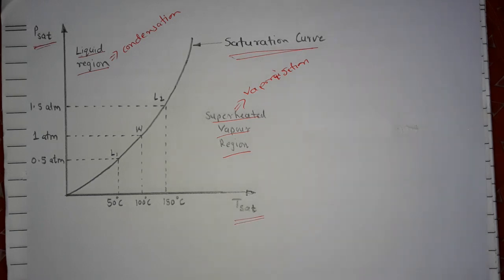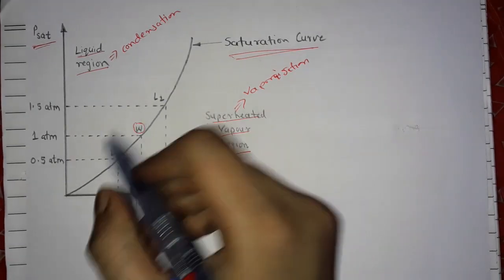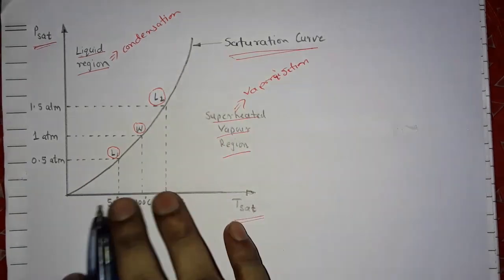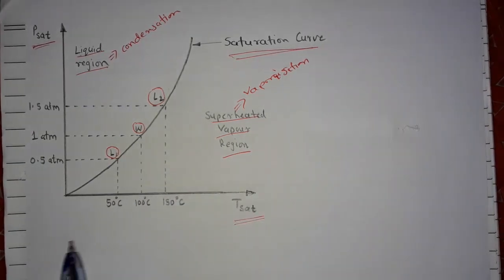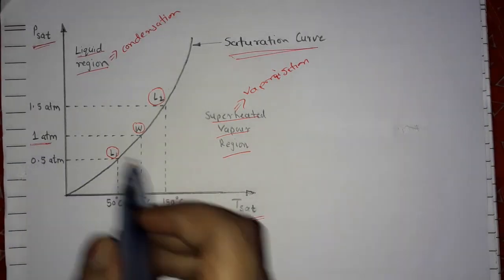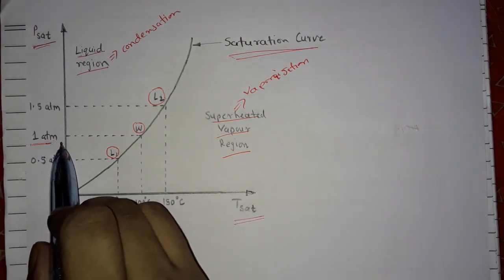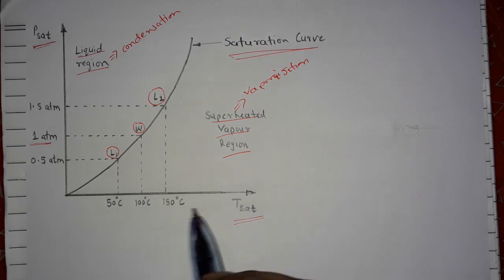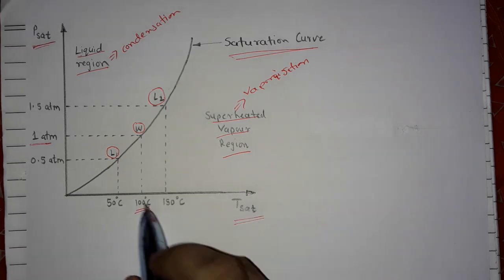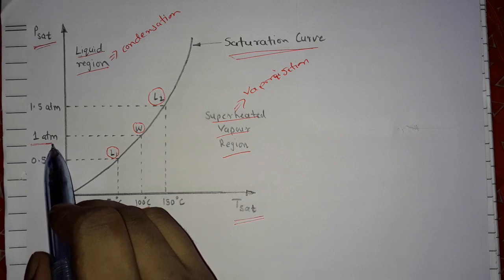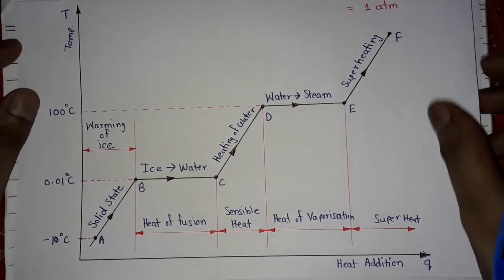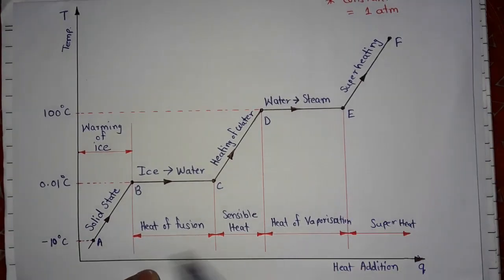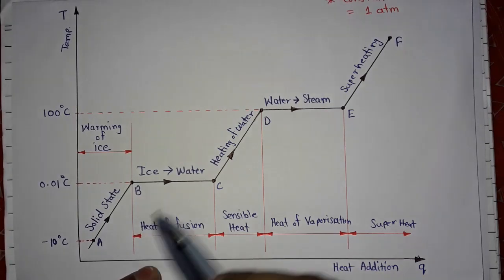Suppose this is water — liquid one and liquid two. We have taken these examples. First we will take water. At one atmospheric pressure, the saturation temperature of water is 100 degrees Celsius. This is the saturation pressure of water and this is the saturation temperature of water.